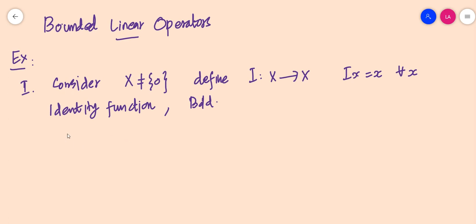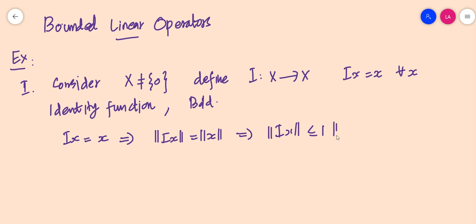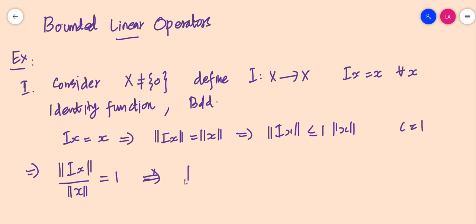To prove it, it is enough to show that norm(ix) / norm(x) ≤ c for some c. Here norm(ix) = norm(x), which implies norm(ix) ≤ 1 · norm(x), so c = 1. Also, norm(ix) / norm(x) = 1 for every x ≠ 0, so its supremum equals 1, meaning the norm of the identity operator is always 1.